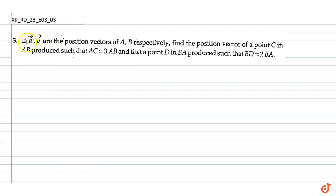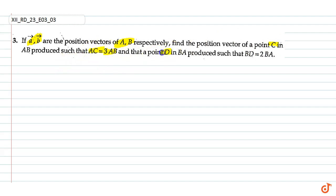In this question we have two vectors, A vector and B vector, and these are the position vectors of points A and B. We have to find the position vector of point C for which AC is equal to 3AB, and the position vector of point D for which BD is equal to 2BA.